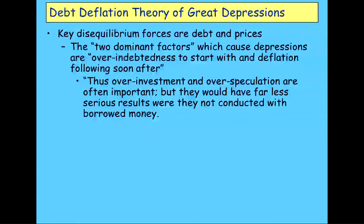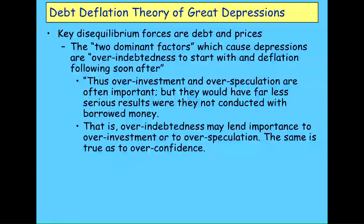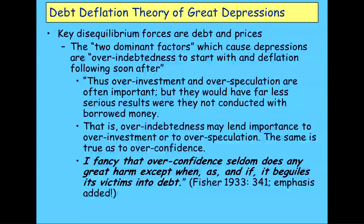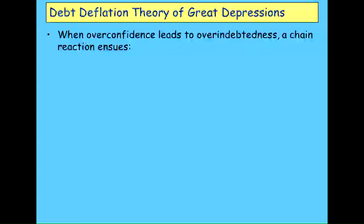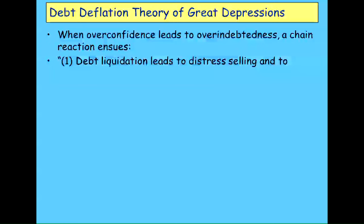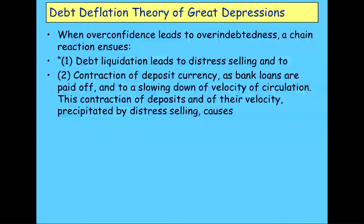The key forces Fisher saw as disequilibriums that mattered were debt and prices. He said the two dominant factors that cause a depression were over-indebtedness to start with and deflation following soon after. He mentioned that over-investment and over-speculation are important, but they wouldn't matter as much if they weren't conducted with borrowed money. And one of the most poignant lines in economics, written from the heart: 'I fancy that over-confidence seldom does any great harm, except when, as and if, it beguiles its victims into debt.'